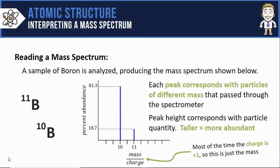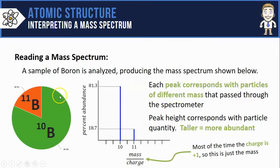So let's summarize my final analysis after interpreting this mass spectrum. I know that boron comes in two isotopes, boron-10 and boron-11. I also know that boron-10 makes up the majority, 81.3% of all the boron atoms, whereas the boron-11 is slightly less common.